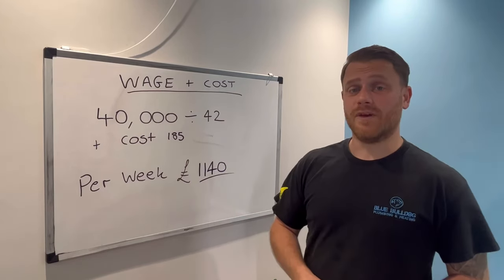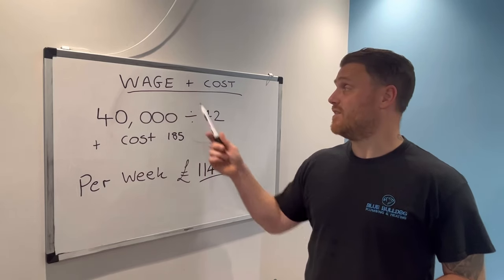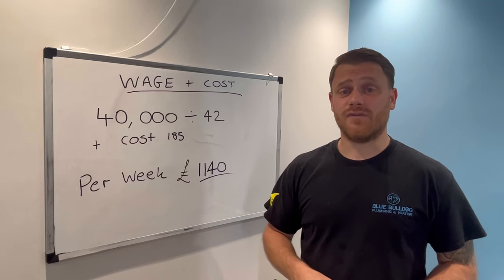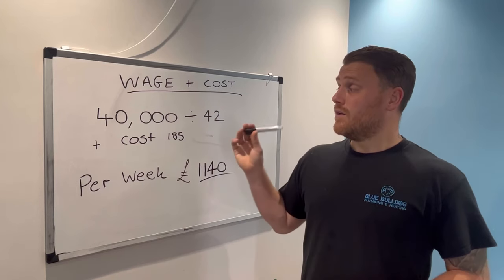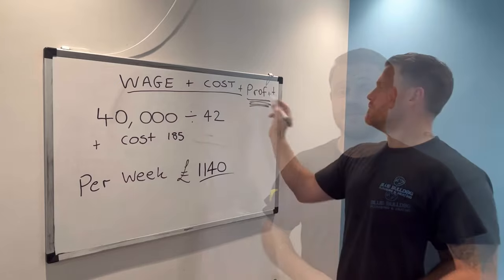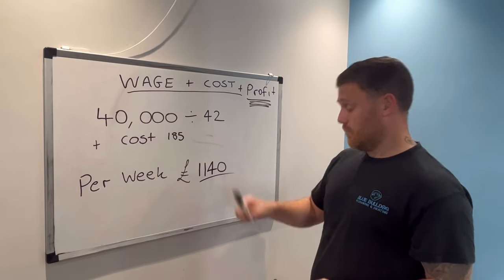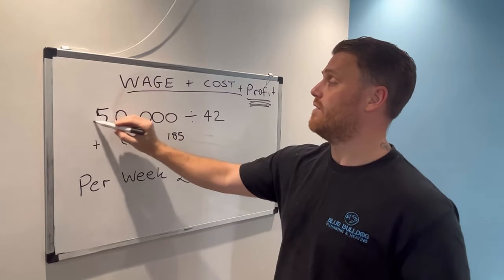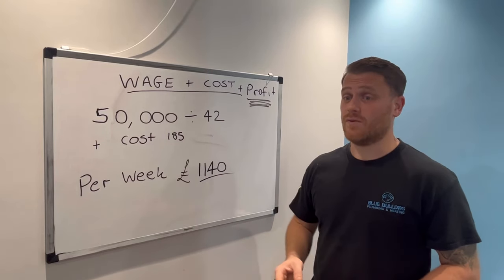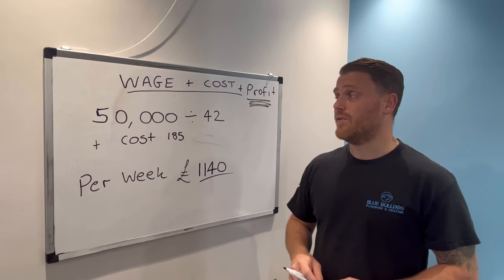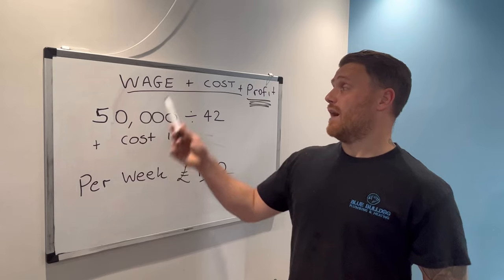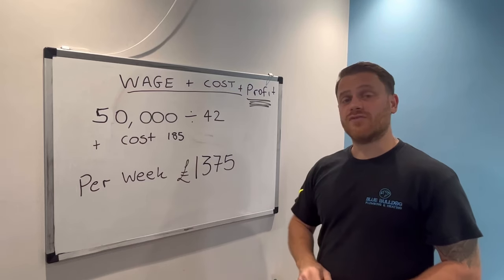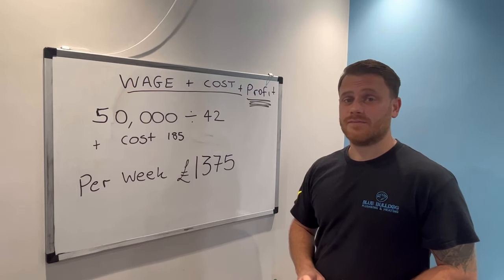But there's something a lot of people forget to add: profit. Unless you're a not-for-profit organisation, your business needs to make a profit to reinvest. So let's add £10,000 per year profit — some may say too high, some too low, but that's our example. Adding £10,000 to the £40,000 wage makes £50,000. Running all the calculations again brings it to £1,375 per week.